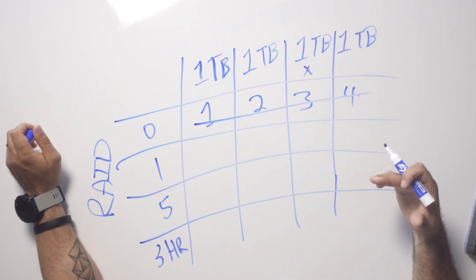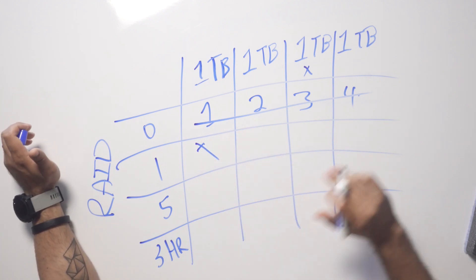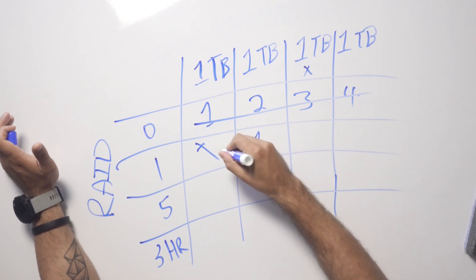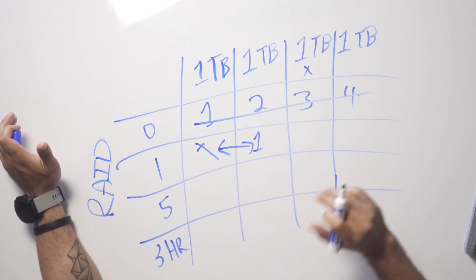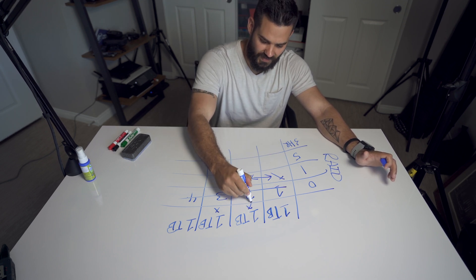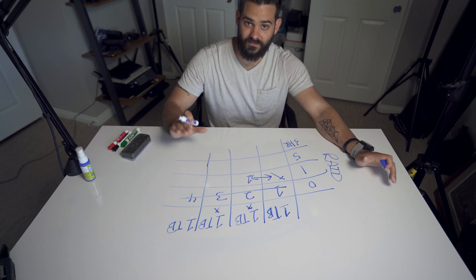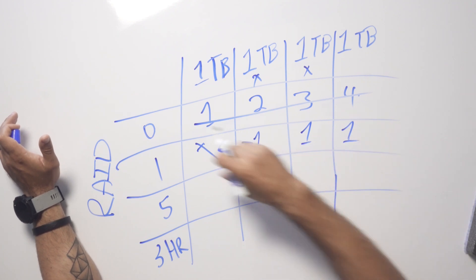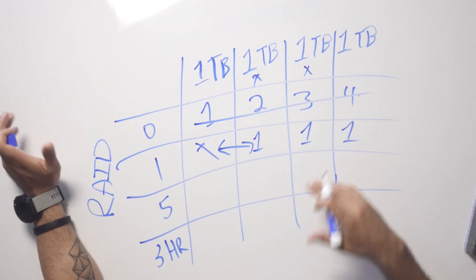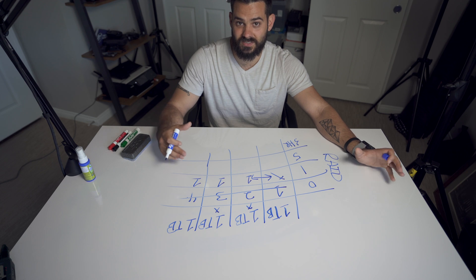RAID 1 is where we start to get into some protection — this is what I was using on my G drive. With two discs, you get one usable terabyte. What this does is mirror each disc, so your first disc is an exact replica. If one fails, you still have a backup. However, it doesn't scale efficiently. All you ever get is the first disc mirrored across all additional discs. So it does give a failsafe, and you could mirror onto four discs, but it doesn't make the most sense in most scenarios.